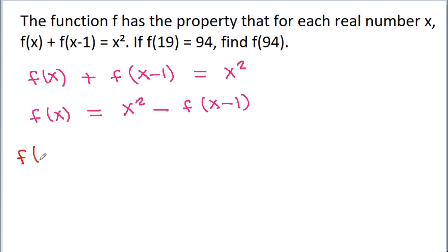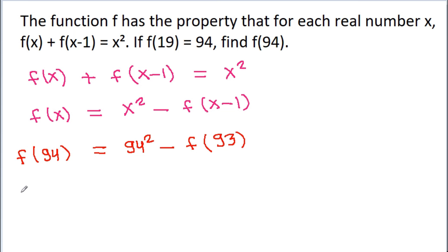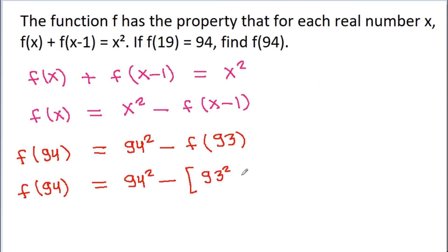So, f(94) will be equal to 94 squared minus f(93). And f(93) will be equal to 93 squared minus f(92).